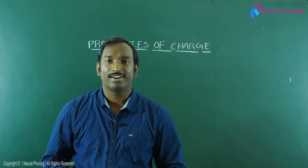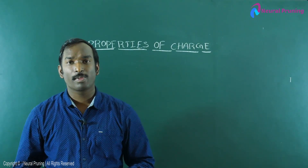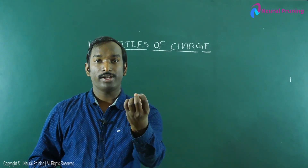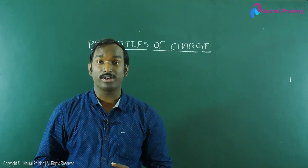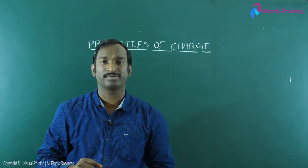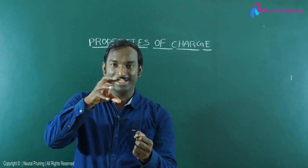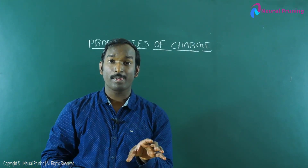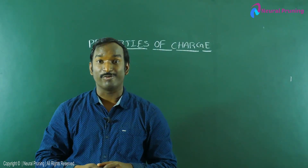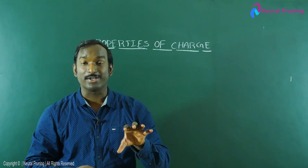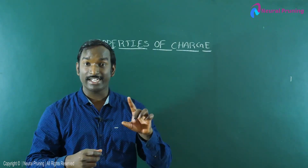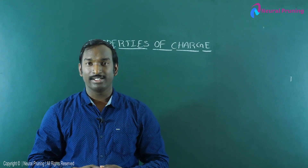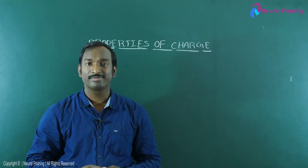You may wonder how an object is charged and what are the methods to charge a given object. Suppose you have a neutrally charged body — a neutrally charged body has equal numbers of positive and negative charges. Neutral means there are charges, but equal numbers of positive and negative. To make a neutrally charged body become positively or negatively charged, we have three methods: charging by conduction, charging by induction, and charging by friction.